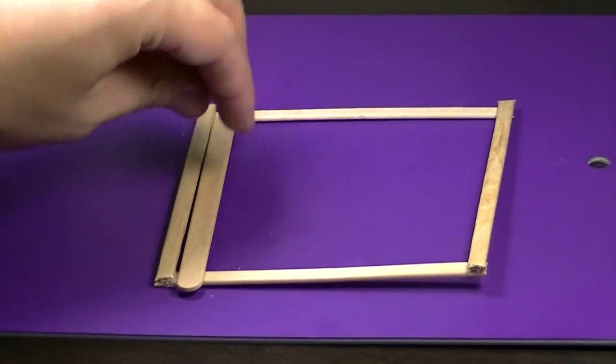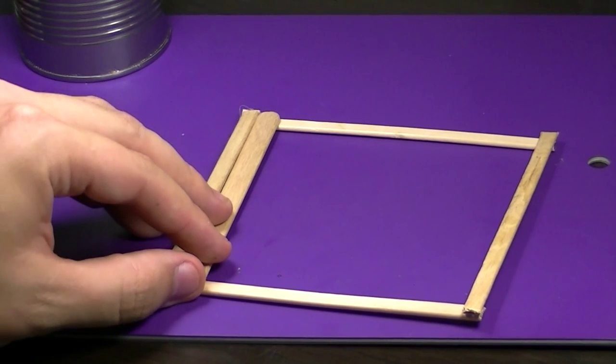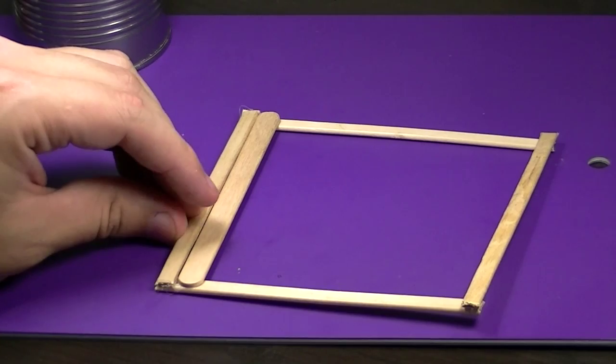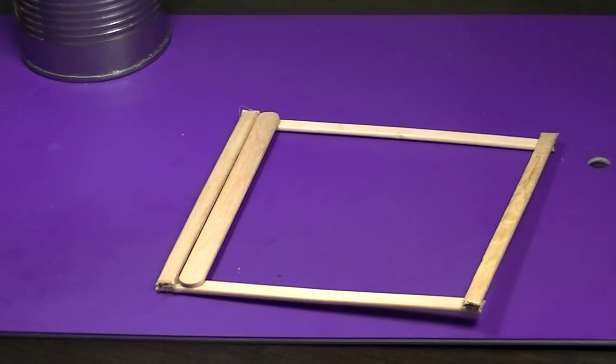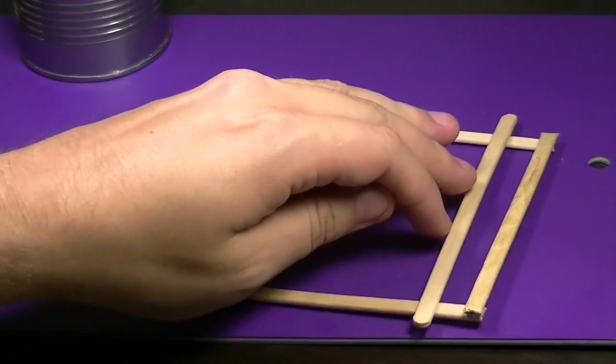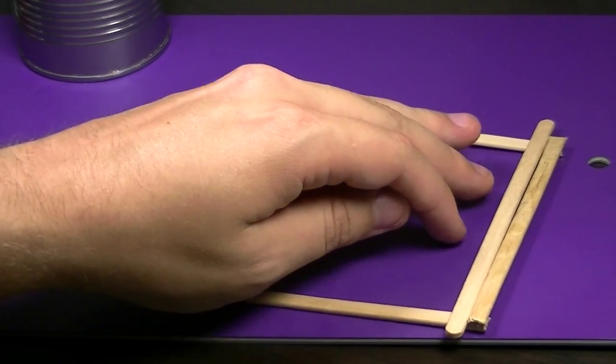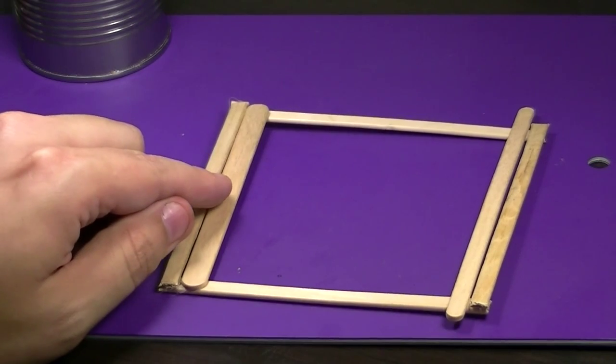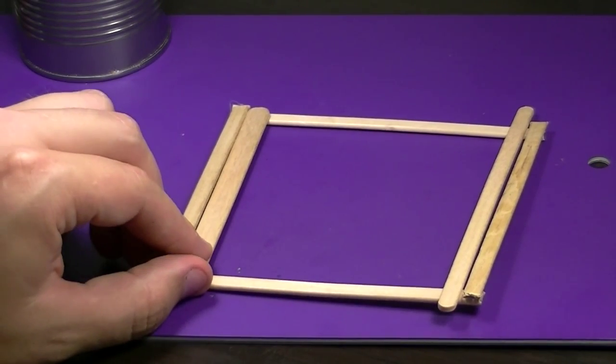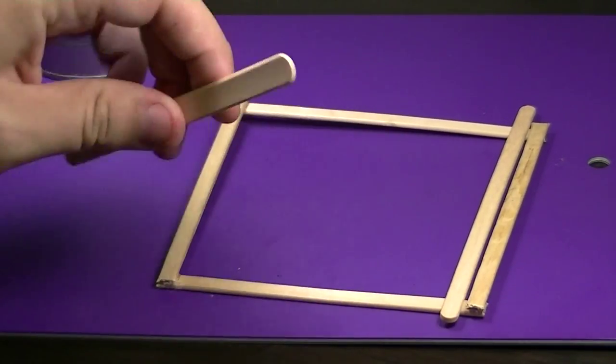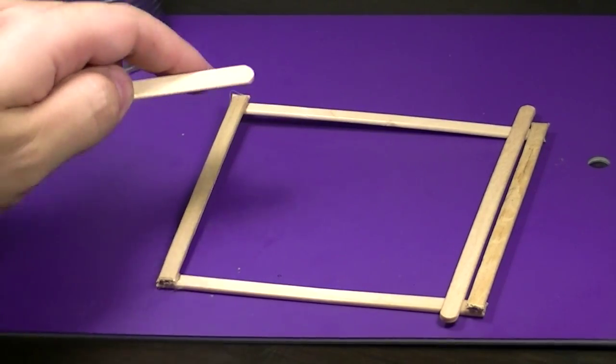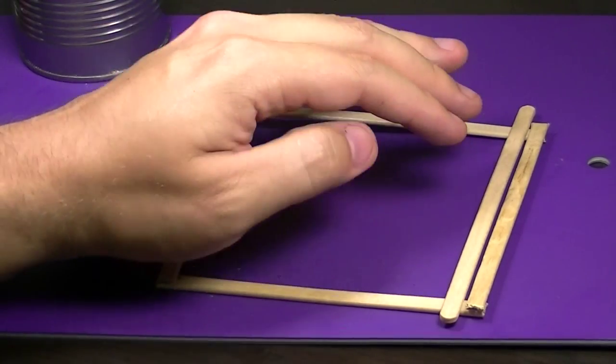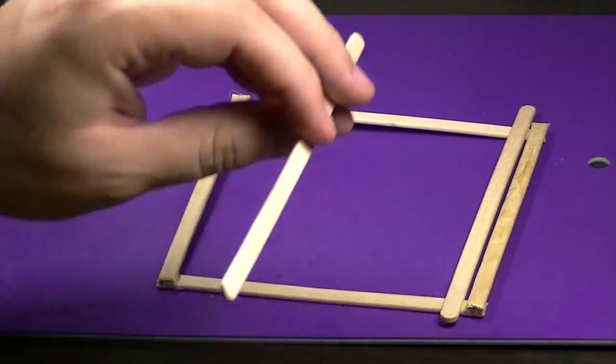So next you can use your thicker popsicle sticks here to make the floorboards. But as you can see, it's kind of short. So you'd have that rounded part. So if you want to use those, I'd make the frame out of those. So I'm going to use my longer popsicle sticks and just essentially glue them all down. And then I'm going to cut them after. So you want to do that. You can either do all the cutting beforehand or after. I choose to do it after.